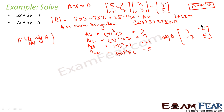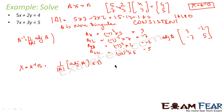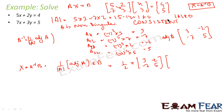So I have adjoint of A. Now I have to find X, which is nothing but A inverse B, and A inverse is 1 by determinant of A into adjoint of A, into B. Let me put in all the values: 1 by determinant of A is 1 by 1, since the determinant is 1. Adjoint of A is the matrix [3, minus 7; minus 2, 5], and B is [4, 5] — because in AX = B, this is B.